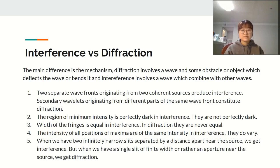Second, the region of minimum intensity is perfectly dark in interference, but in diffraction they are not perfectly dark. Third, the width of the fringes is equal in interference, but in diffraction they are never equal.